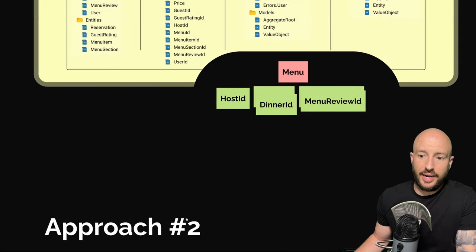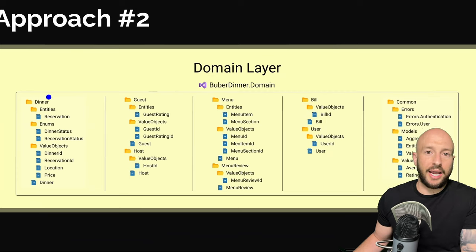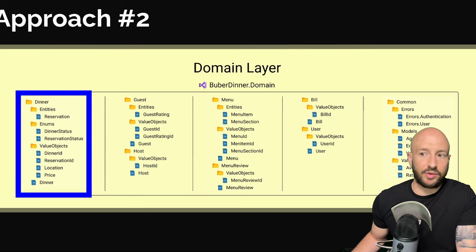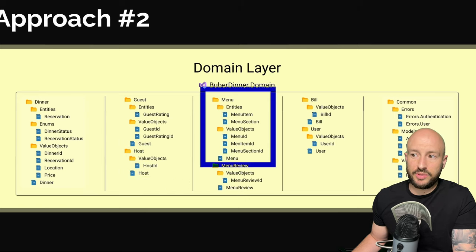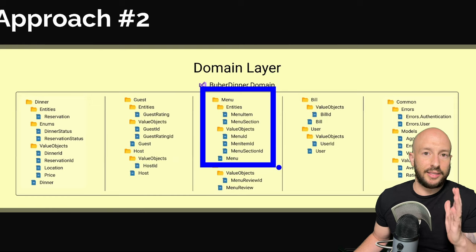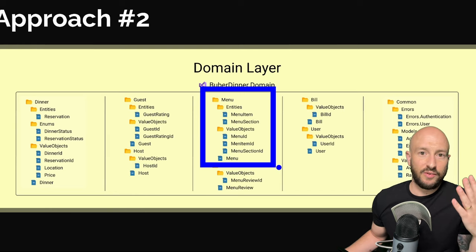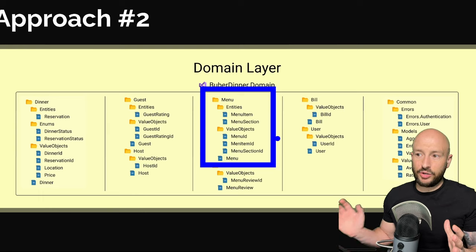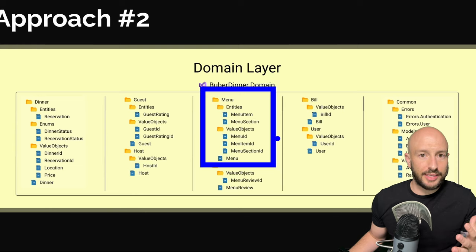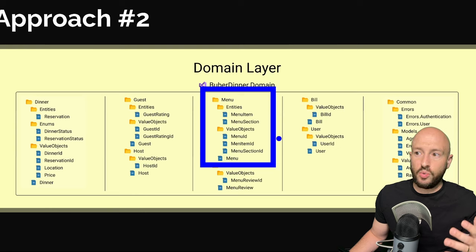That's exactly what we do in approach number two. Each one of the aggregates receives a folder — here's the dinner aggregate, the guest aggregate, the host aggregate, and so on. Looking at the menu specifically, we have everything related to the menu together. One great reason for this — beyond the opposite of approach one's problems — is that when you want to refactor, many times you might want to take an entire slice of logic and move it to a different bounded context or a different system. As the system grows you may want to move some stuff around. With this approach you basically have a folder self-contained with everything you need, and you can simply move it wherever you want.